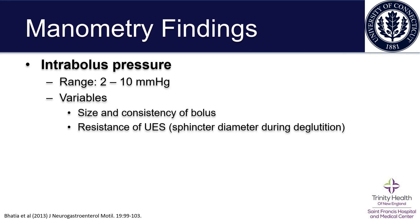As for intrabolus pressure, the normal range is noted here. When we see variability in the intrabolus pressure, it is often due to the size and the consistency of the bolus. While consistency of the bolus may be something that can be controlled, sometimes size is more difficult to control.